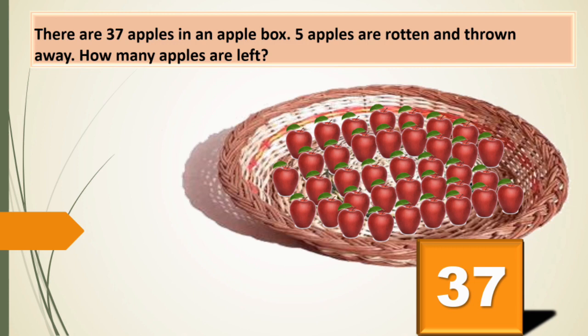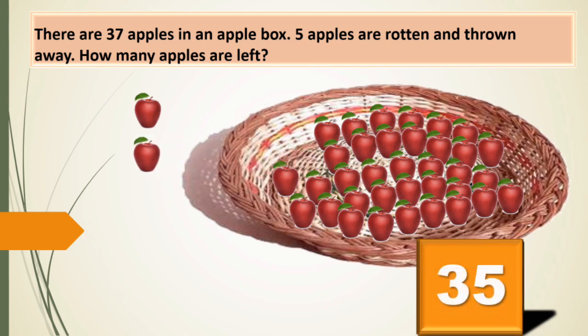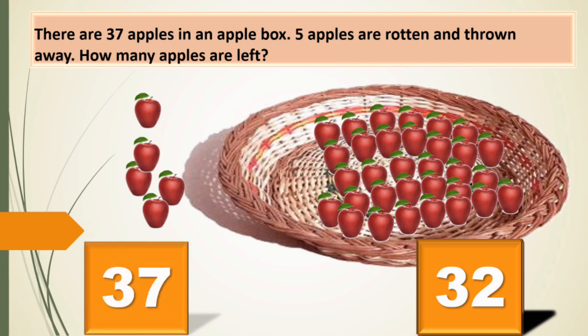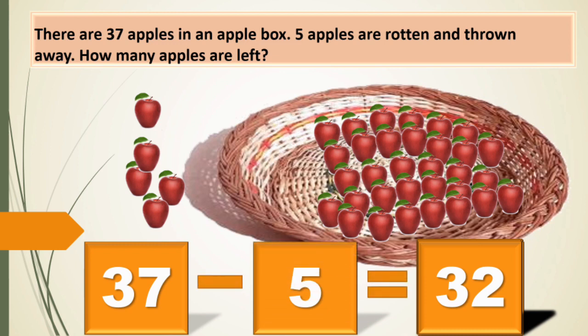So kids there are 37 apples. When we throw one rotten apple, 36 are left in the basket. When we throw one more apple, 35 are left. When one more is thrown, 34 are left. When we throw one more, 33 are left. When we throw one more apple, 32 are left. There are 37 apples and five rotten apples are thrown away. Now we have 32 apples.